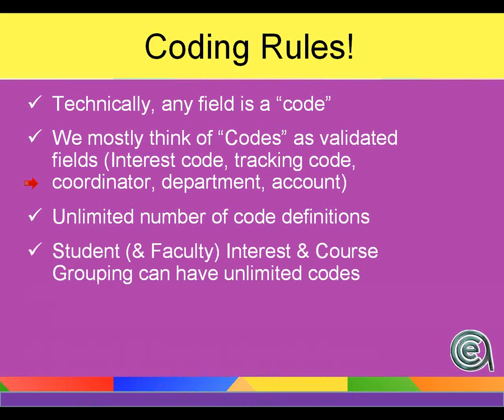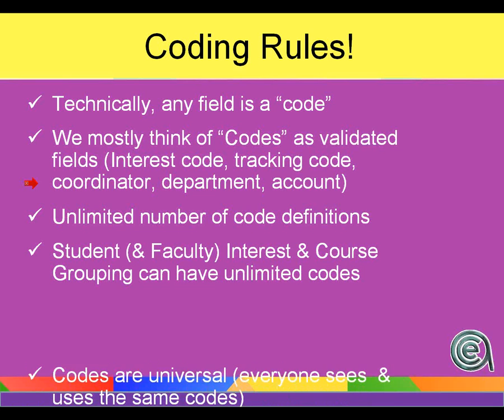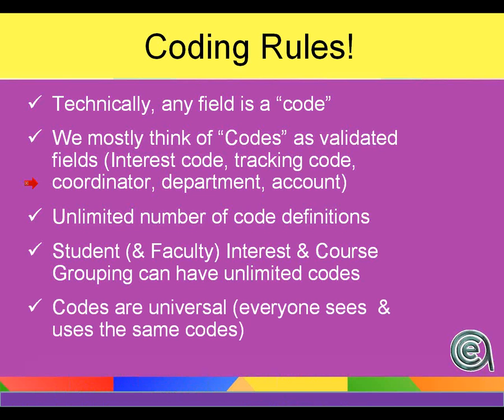Certain code areas — for instance, interest codes on the name record and faculty grouping codes on the course — you can have an unlimited number of codes for any one person or any one course. Codes are universal: everybody who is logging into Aceware Student Manager will see and use the same codes.